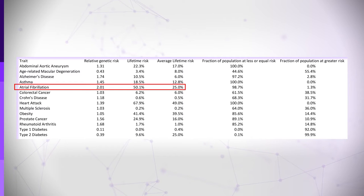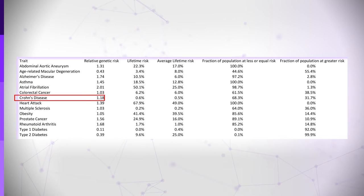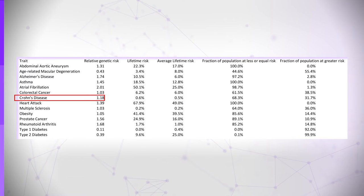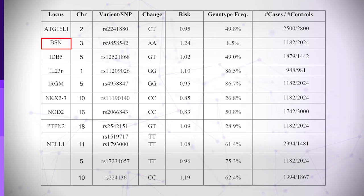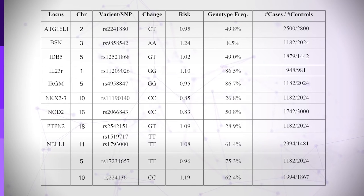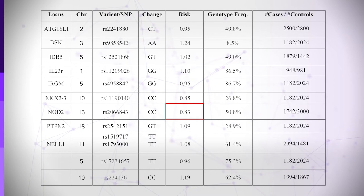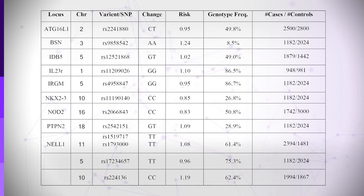Let's look in more detail at where such a number comes from for another trait shown — risk of Crohn's disease. In this case, that is slightly elevated at 1.18. We can break that down into contributions from representative SNPs in each locus. For example, this individual is homozygous for a risk allele in the gene Bassoon, BSN, and that factor alone increases the relative Crohn's risk to 1.24. On the other hand, there are no risk alleles present in a SNP in NOD2, reducing the risk by about 15%. The total risk is calculated as a weighted sum of these individual SNP contributions.